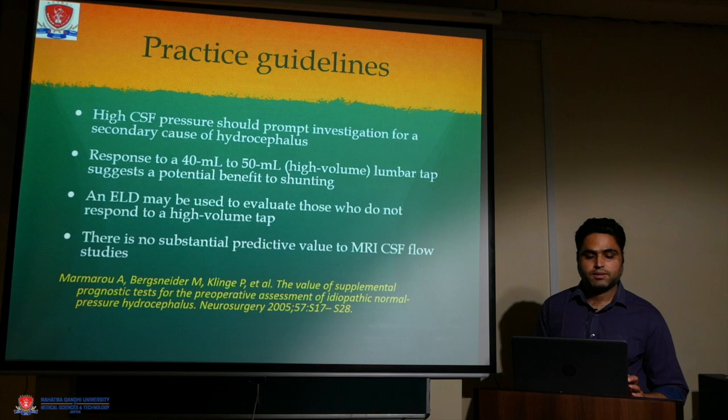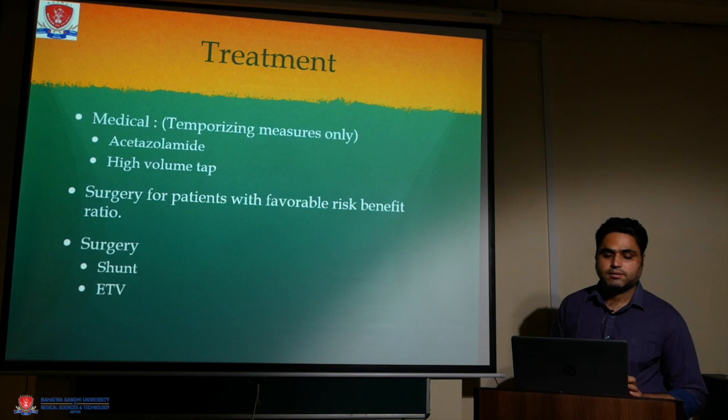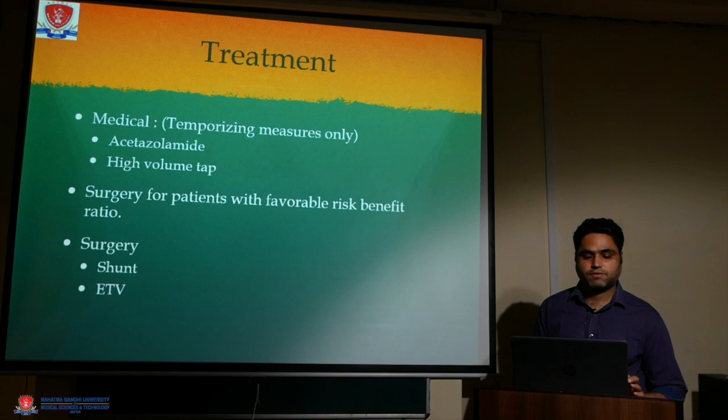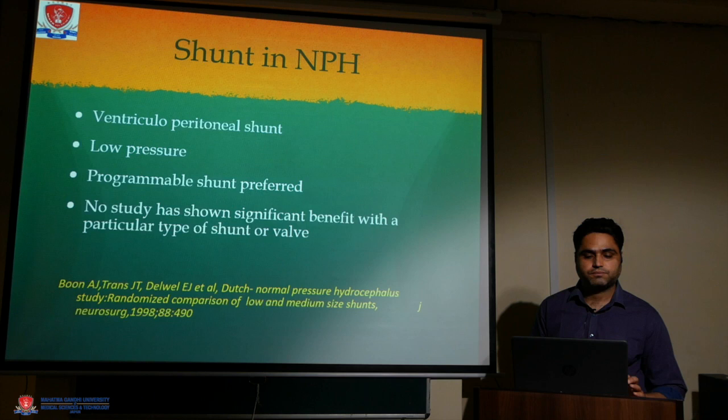Treatment includes medical management as temporary — acetazolamide and high-volume tap — and surgical treatment for patients with a favorable risk-benefit ratio. Surgery options include shunting or ETV. A VP shunt with a low-pressure programmable valve is preferred. No study has shown significant benefit with a particular type of shunt or valve. ETV is considered for patients with relative aqueductal stenosis.